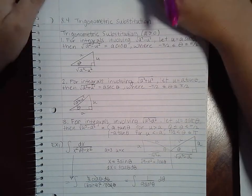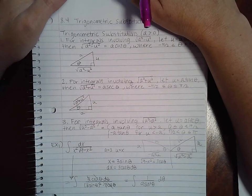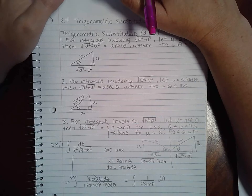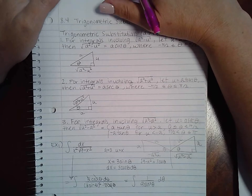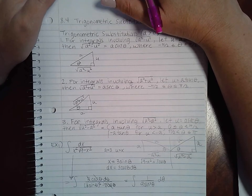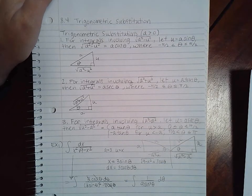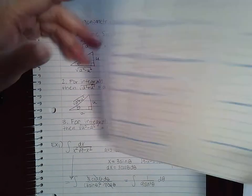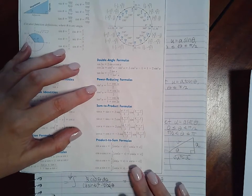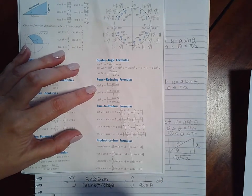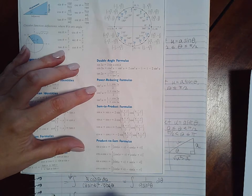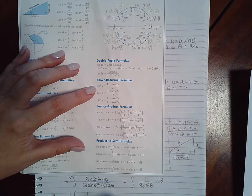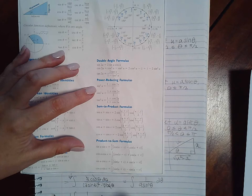We know that when we end up with an integral with just sines or an even power of sines, we should be using our power reducing formulas to simplify those so we can actually integrate this. If we go over and find our power reducing formulas, we have this one here. I'm going to pull out the one ninth, and then I'm going to have one over one minus cosine of two theta over two, d theta.